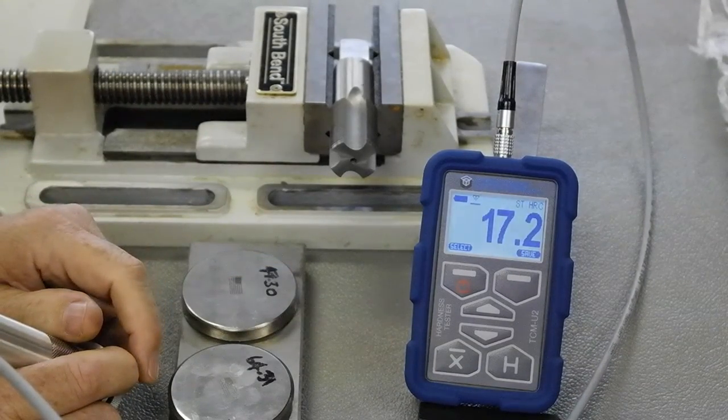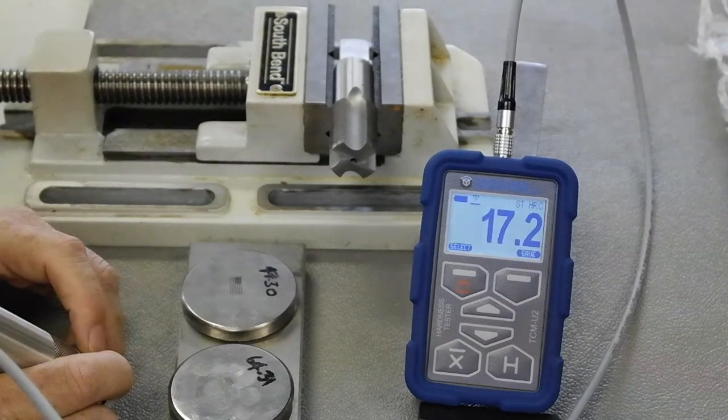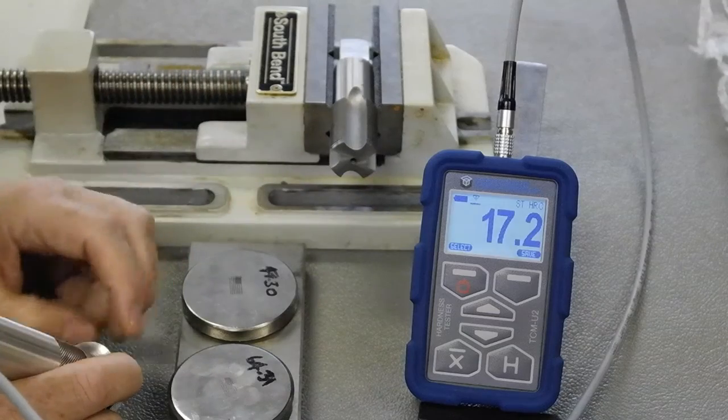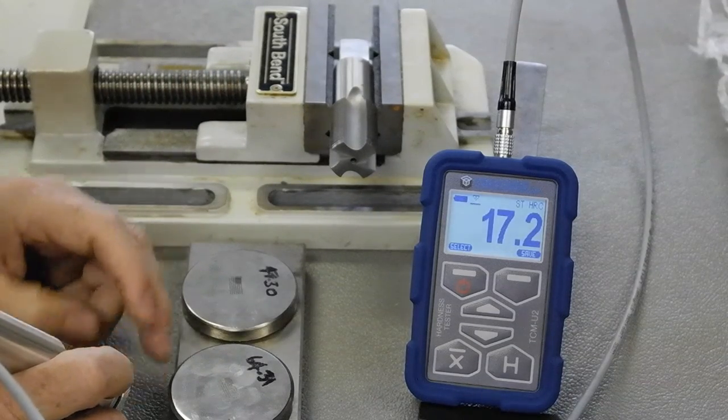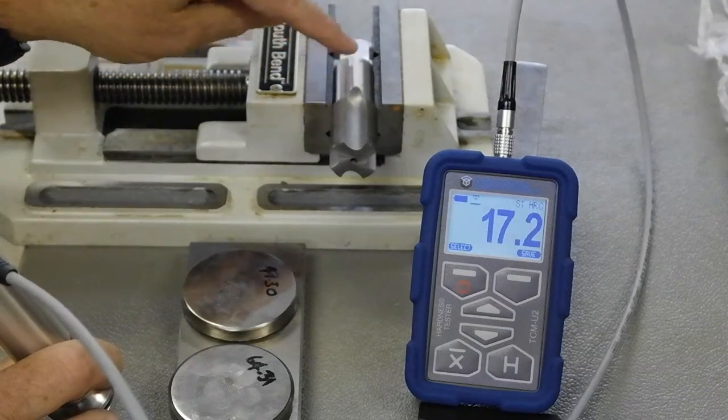The device we certify for accuracy down to 20 HRC, up to about 65. So very hard down to soft. But you can see the device can also actually check lower. But you're going to get more variations at the very low end. I just wanted to show that this is going to show very soft.